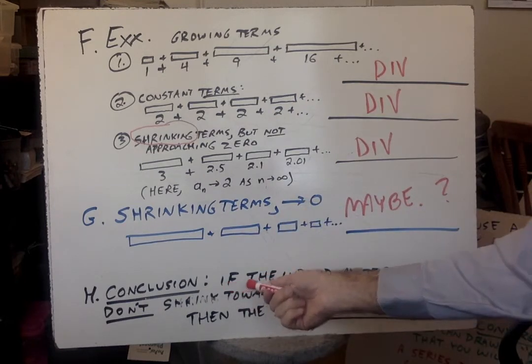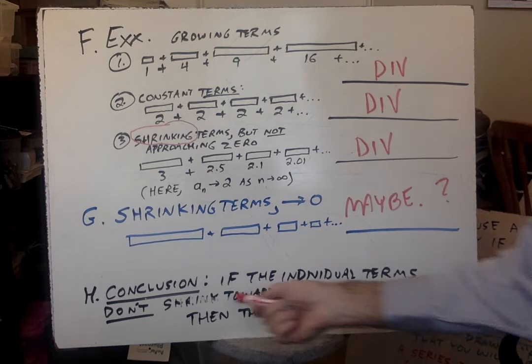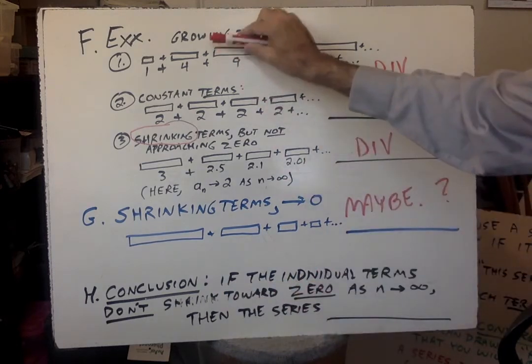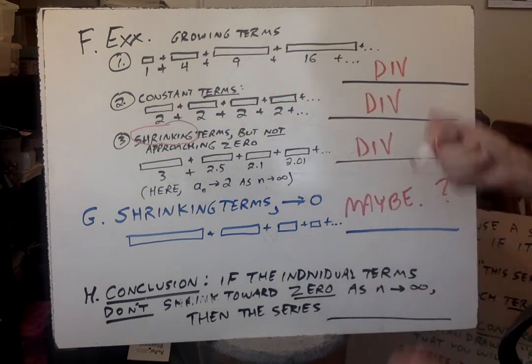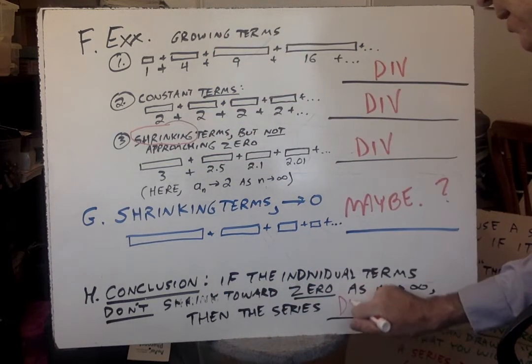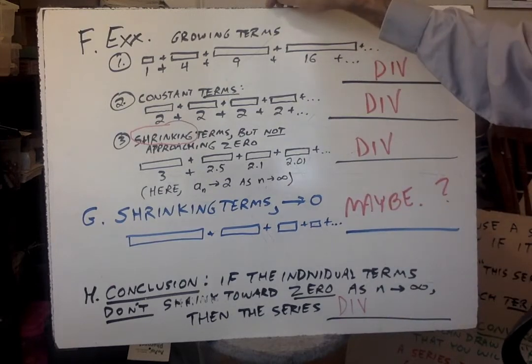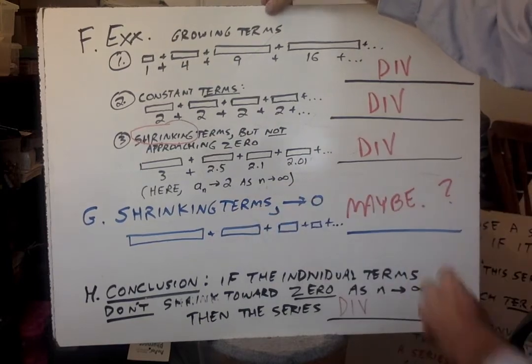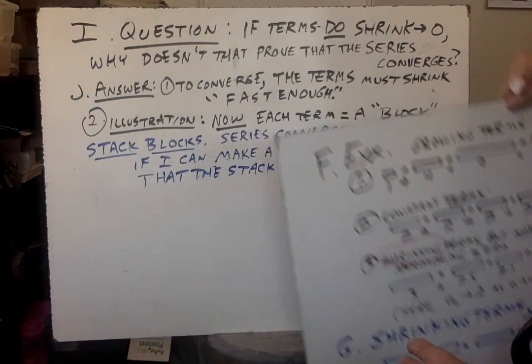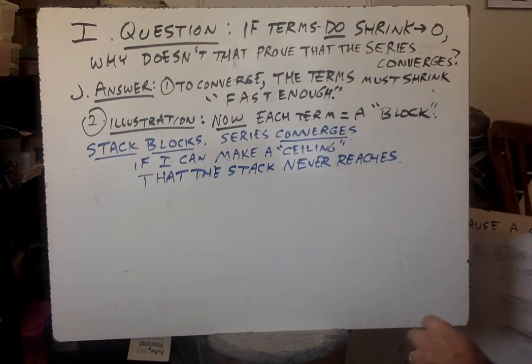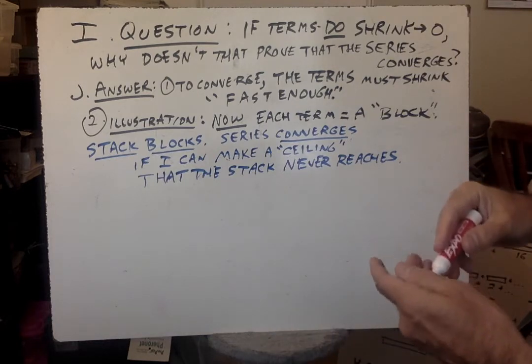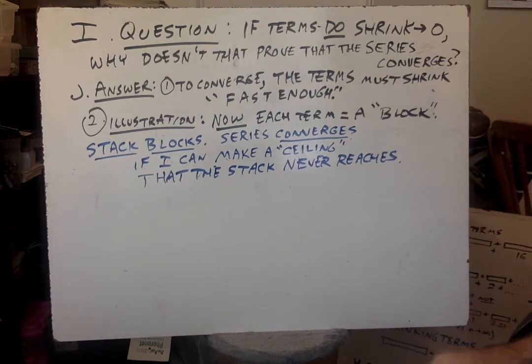So all this can say is maybe. This is the TSA visible gun test. This rules you out, this does not rule you in. It just means we have to apply more tests to the series to see if it converges. Here's the conclusion. If the individual terms don't shrink towards zero as n gets bigger and bigger, then the series diverges. If the terms don't shrink to zero, notice that they have to shrink to zero to pass this first test. So if they don't shrink to zero, then we know for a fact the series diverges. It's useless. And you're done. Diverge. And there's nothing more you can do with that series.